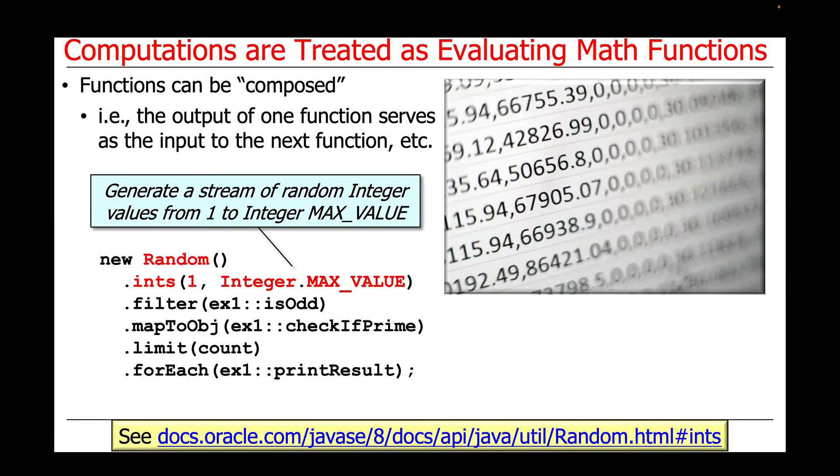This particular example will use the random class and the ints method on the random class to generate a stream of random integer values from one up to integer max value, meaning that they could be large or small within that range.